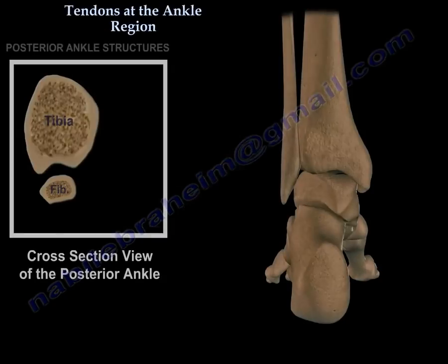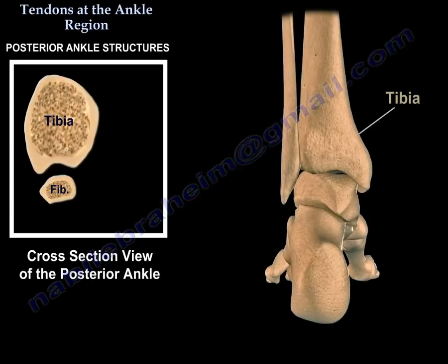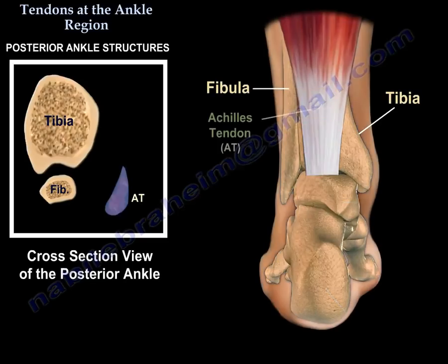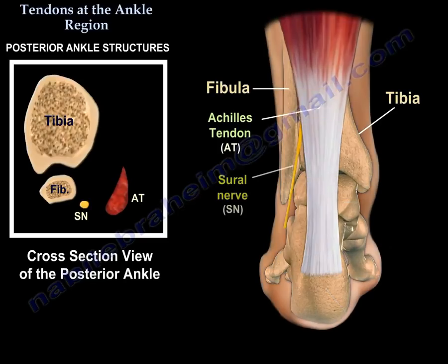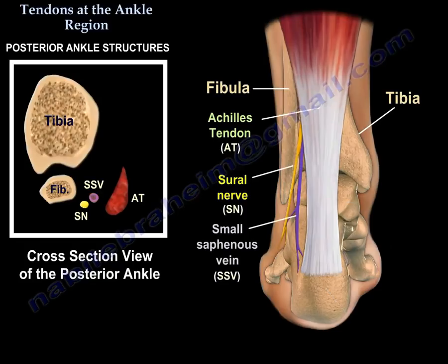Tendons at the posterior aspect of the ankle. There is only one big tendon — the Achilles tendon. You can see next to it the sural nerve and the small saphenous vein.